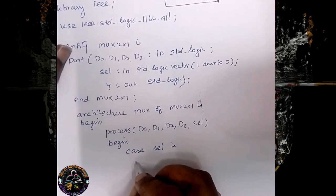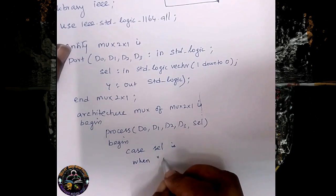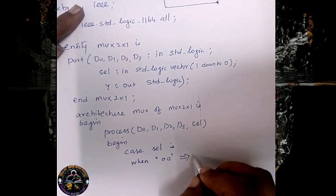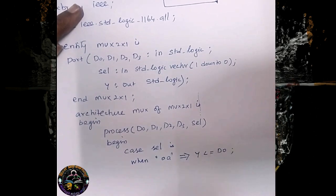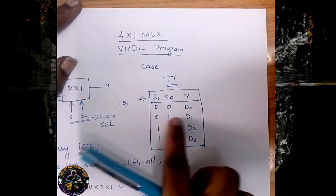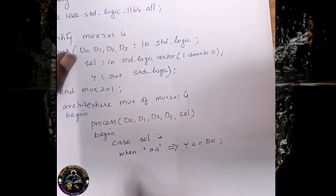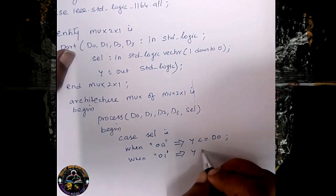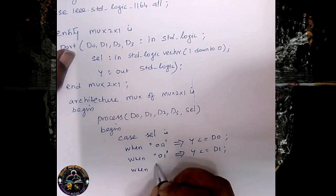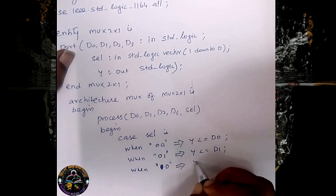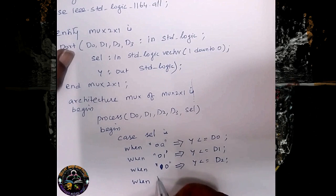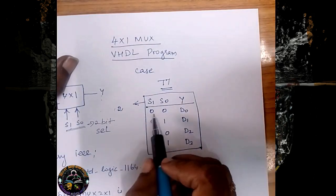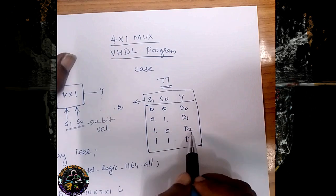The first combination: when selection is "00", then output Y equals D0. Second: when selection is "01", then output Y equals D1. Third: when selection is "10", then output Y equals D2. Fourth: when selection is "11", then output Y equals D3. So: 00 → D0, 01 → D1, 10 → D2, 11 → D3.